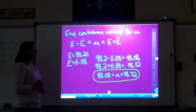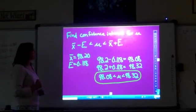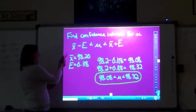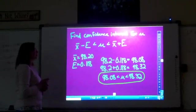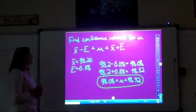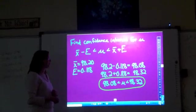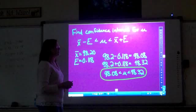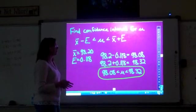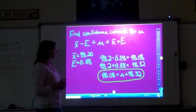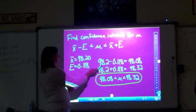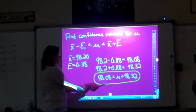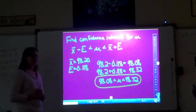In order to find the confidence interval for the mean, we're going to take our mean from the sample minus the margin of error, which we found in the last part, which is less than the mean, which is less than the mean plus the margin of error again. So we're just going to plug our numbers into this equation, and we come up with the confidence level as shown here.